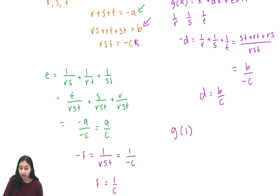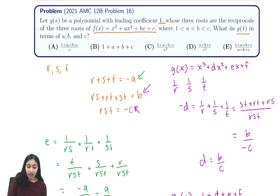So when we plug in g(1), we're going to have 1 + d + e + f, and that's going to be 1 + b/c + a/c + 1/c. Rewriting this under a common denominator, we get 1 + (a + b + c)/c. That's option choice A, so we can select A as our answer.